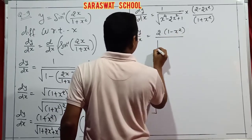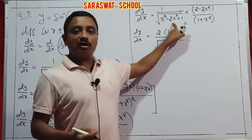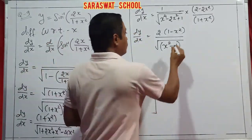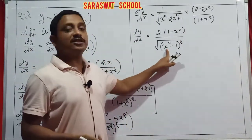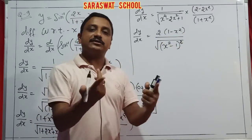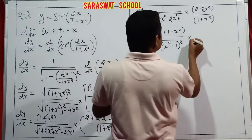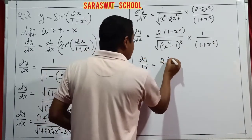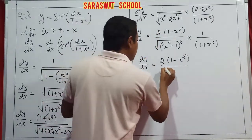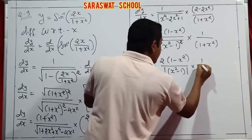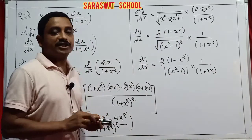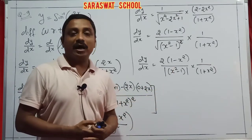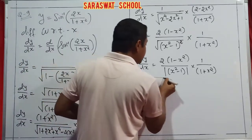So dy/dx has modulus |x²-1| and (1+x²) in the denominator. There are 3 cases: positive, negative, or zero. Case 1: if x > 1, then x² > 1, so x²-1 > 0, and modulus |x²-1| = x²-1 (positive). Case 2: if x < 1, then x² < 1, so x²-1 < 0, and modulus |x²-1| = -(x²-1). Case 3: if x = ±1, then x²-1 = 0, so 1/(0) — dy/dx does not exist.